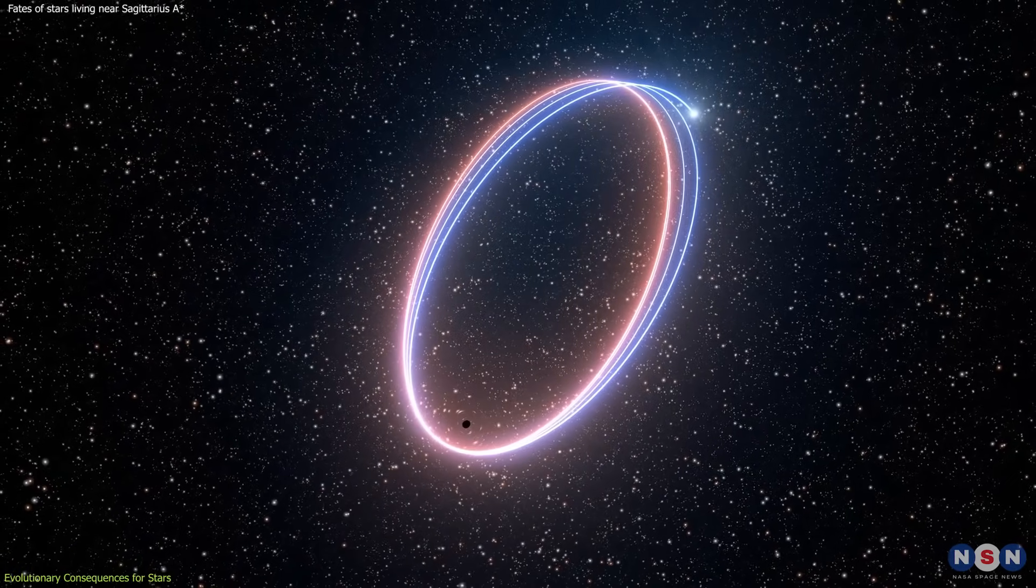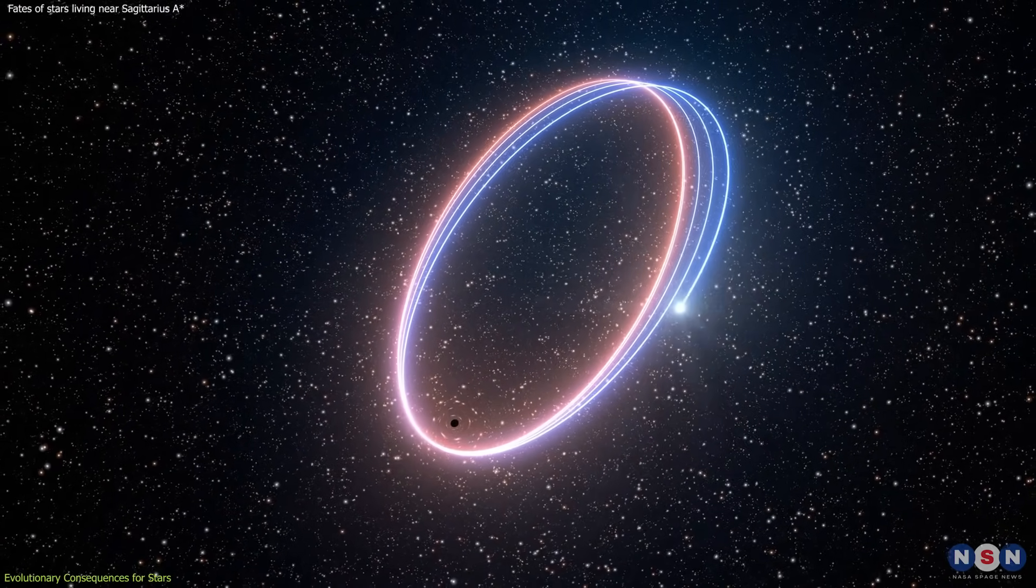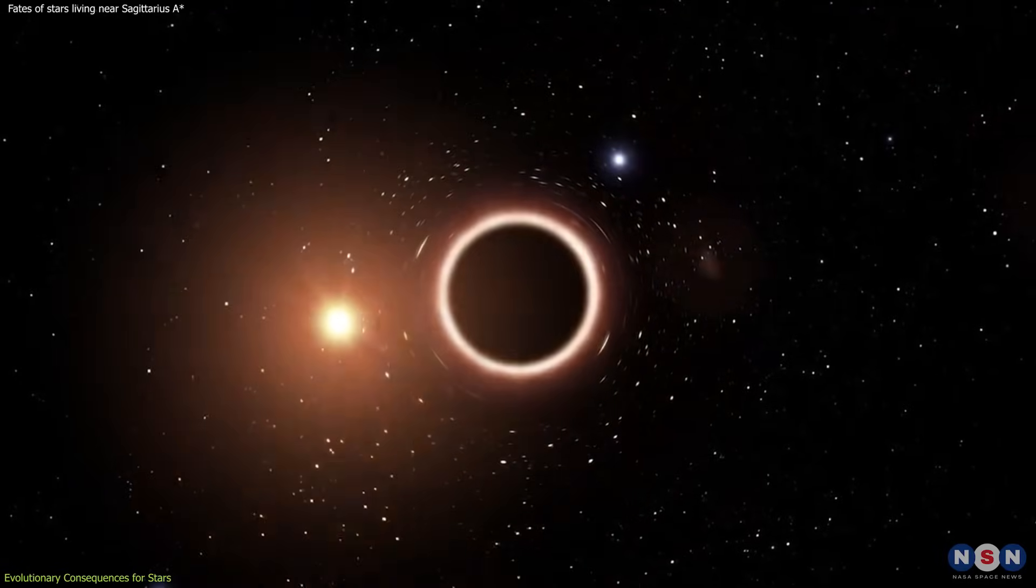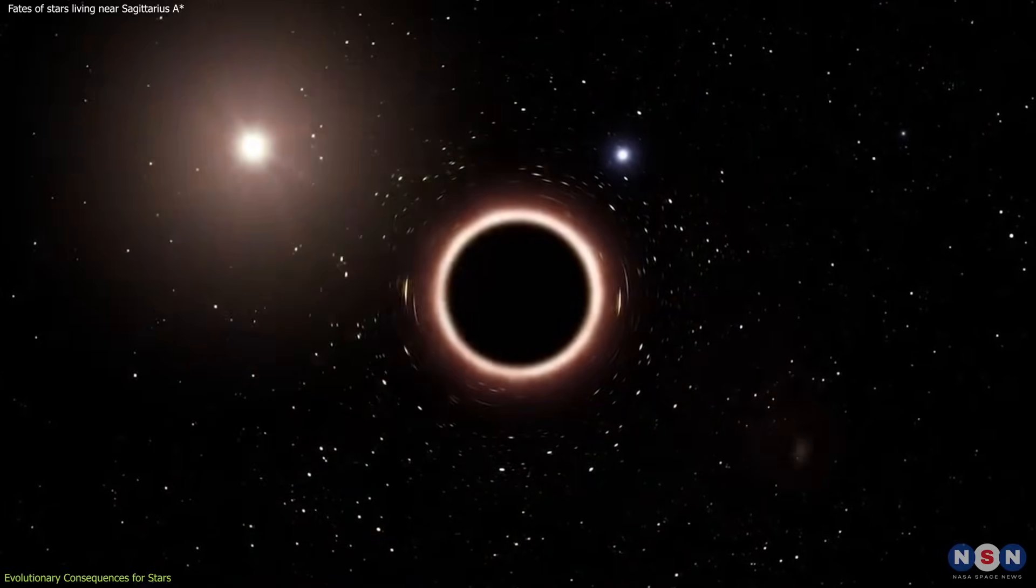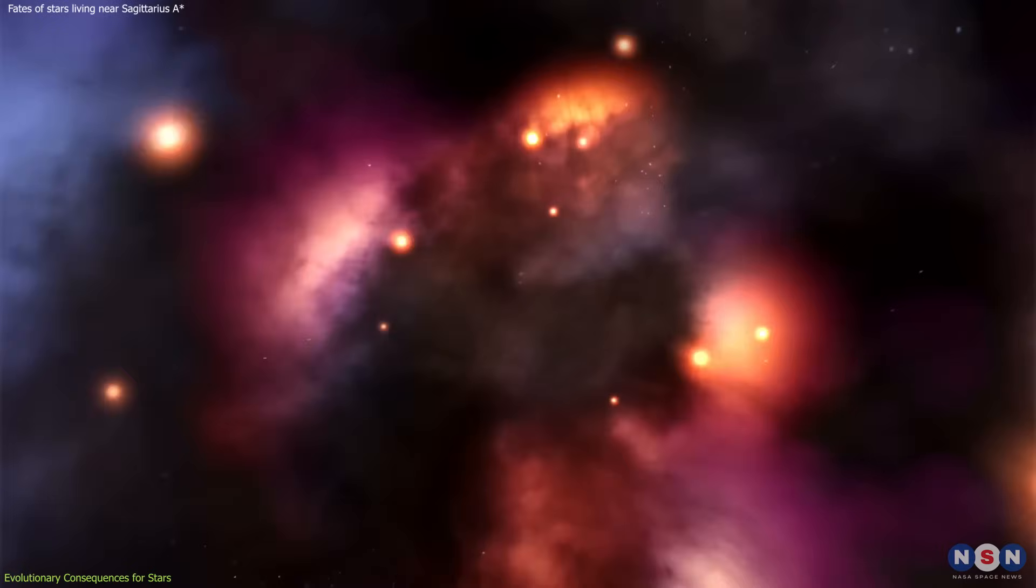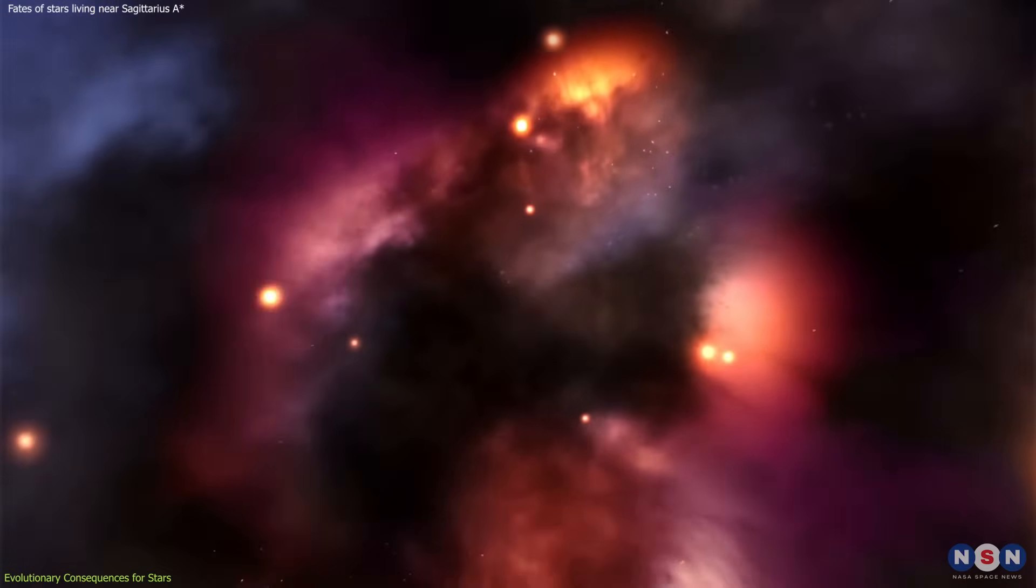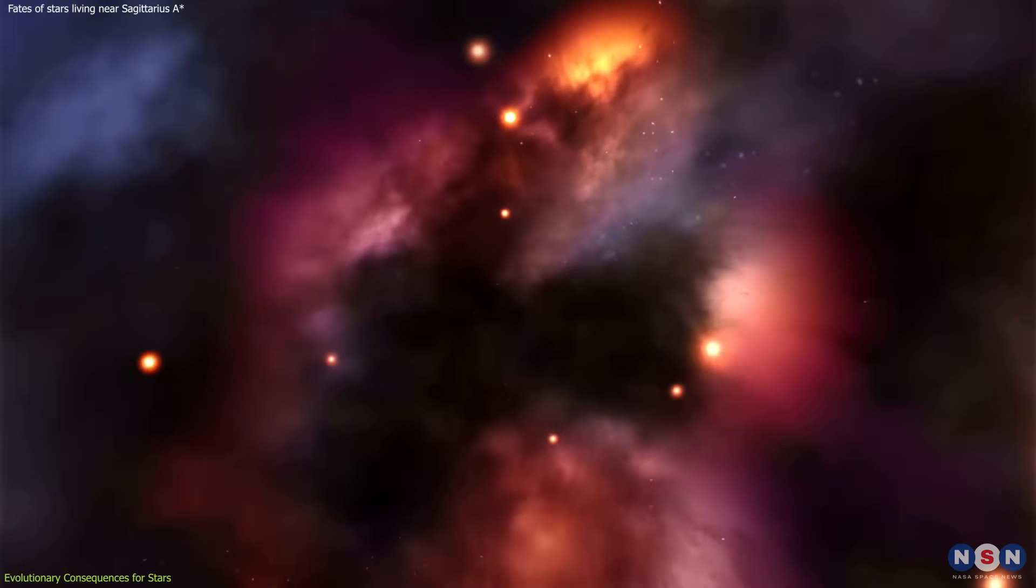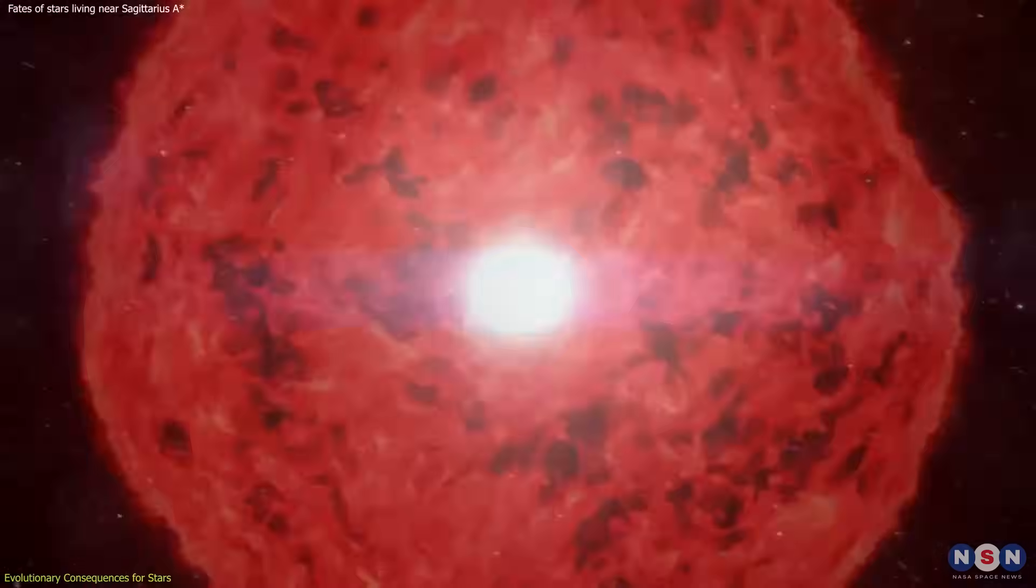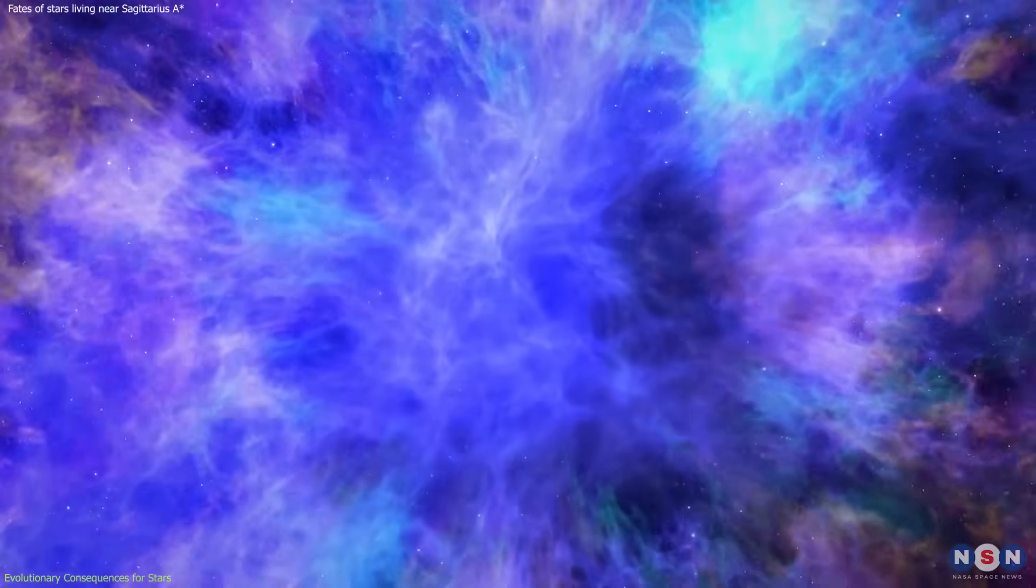Firstly, the frequent and intense gravitational interactions can lead to rapid changes in a star's orbit, potentially bringing it closer to the black hole or other stars. This increases the likelihood of collisions and mergers, accelerating the rate of stellar evolution in this region. The chaotic nature of the environment means that the life cycles of stars here are far more unpredictable than in more stable regions of the galaxy.